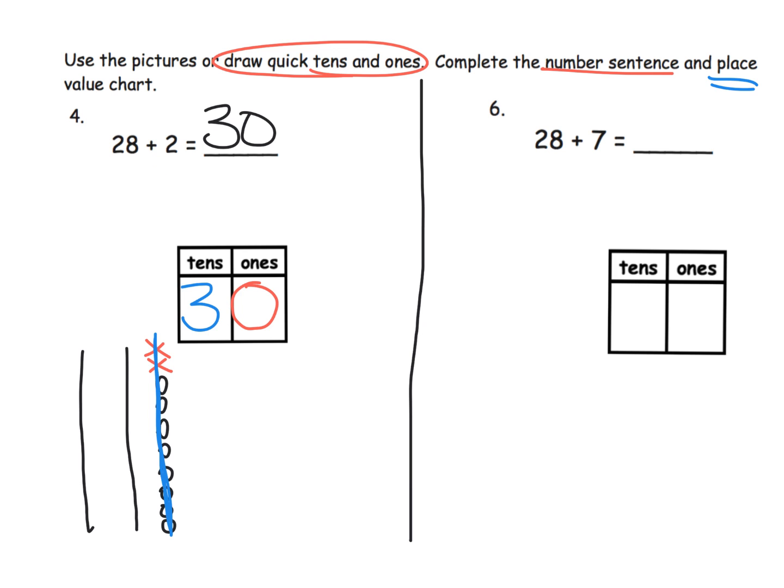Whereas if you just kind of count, you know, say 28 and punch the air with the fist and then say 29, 30, and count two more, yes that works, but it's not leading towards the standard algorithm. So it's worth doing all this rigmarole down here because we know it's going somewhere.